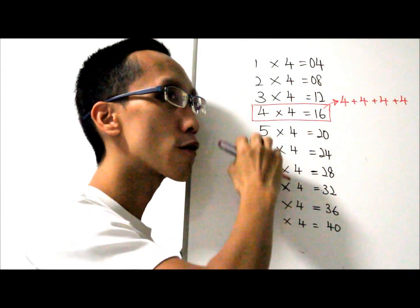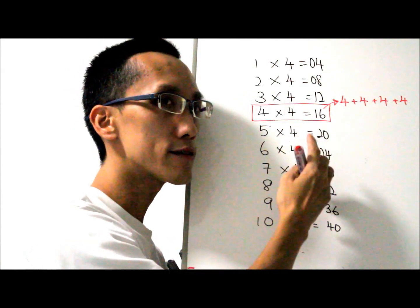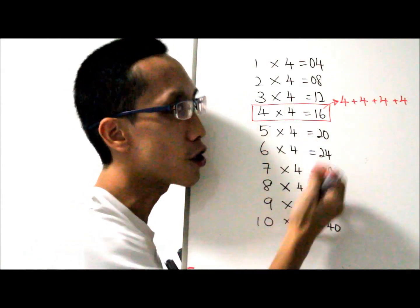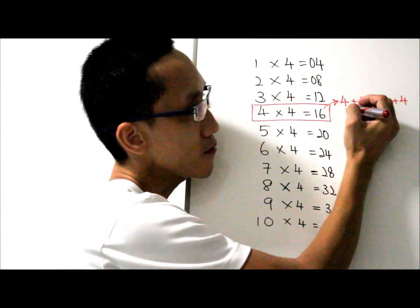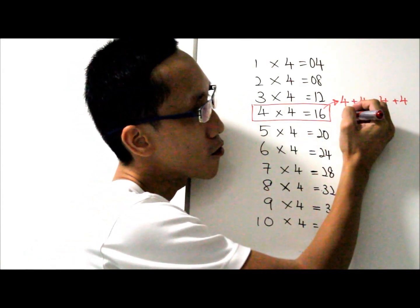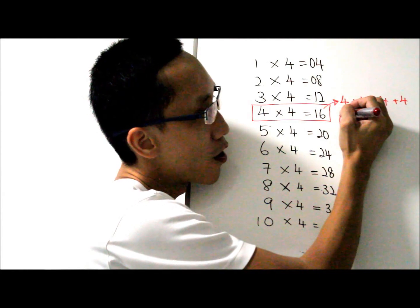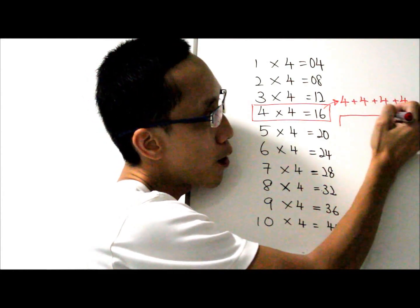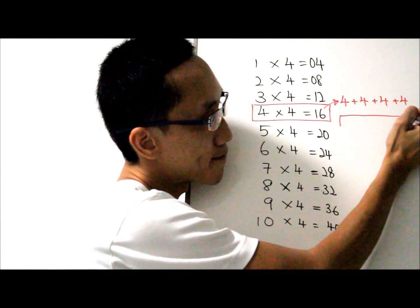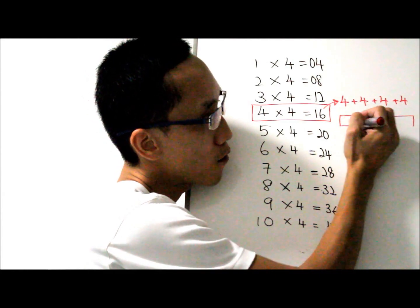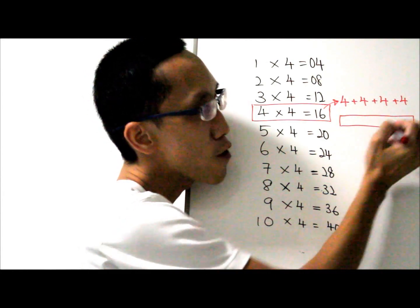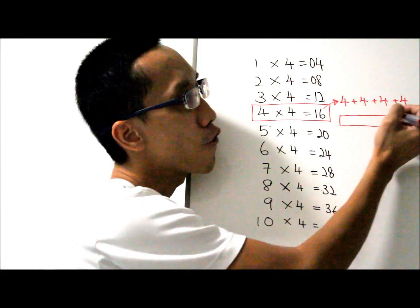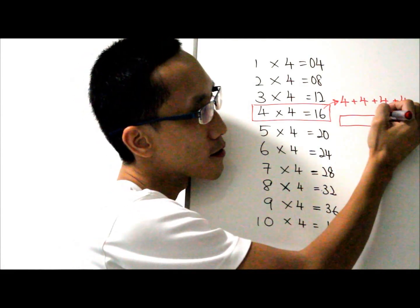So after that, you can go on to the next thing called Model Drawing. You draw a rectangular box and you cut it into 4 parts.